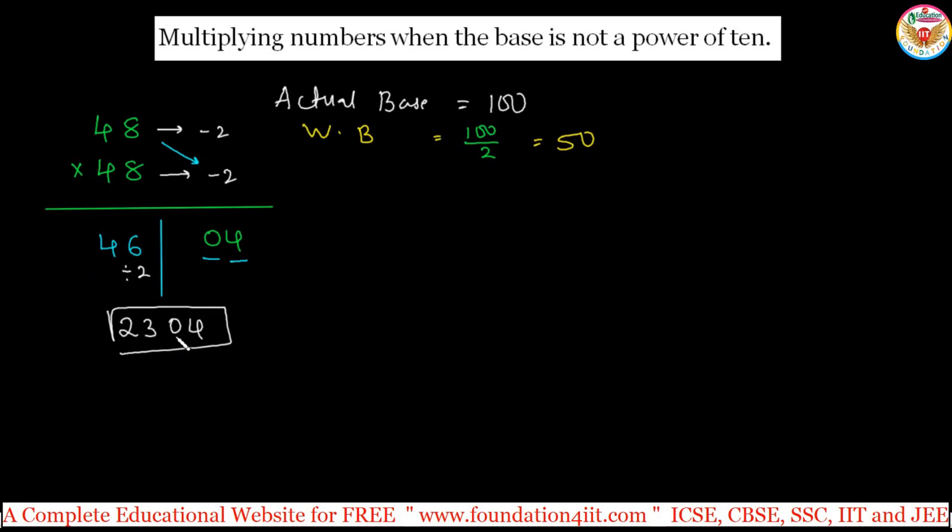Let's have one more example, you'll get a more clear idea. Example second one: instead of base 10, 100, 1000, and so on, for example 27 into 28. These are both numbers. In mind you can keep actual base is what and what base you are working on. Actual base is 100. Actual base must be only power of 10.